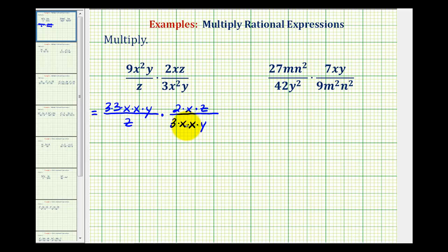So in this form, we can easily identify all the common factors between the numerators and denominators that we'll simplify to one. Three over three simplifies to one, x over x simplifies to one, x over x, and y over y, and here we have a z over z that simplifies to one.